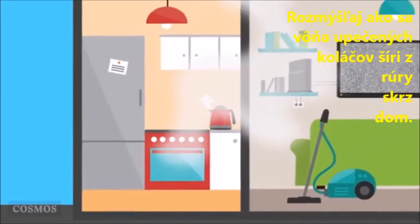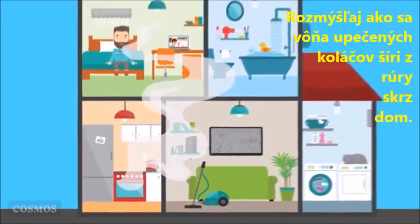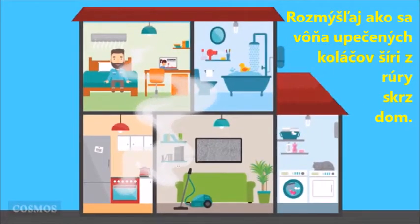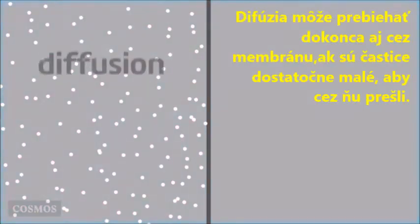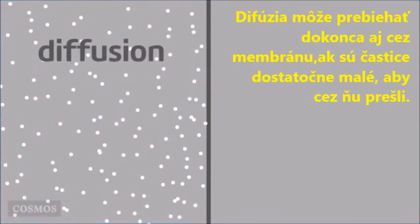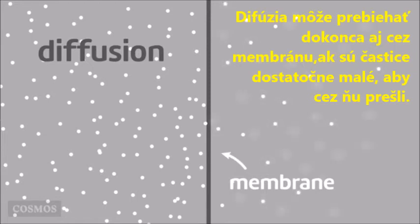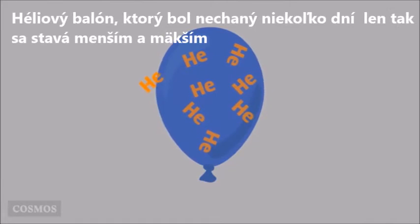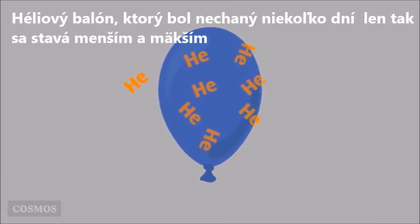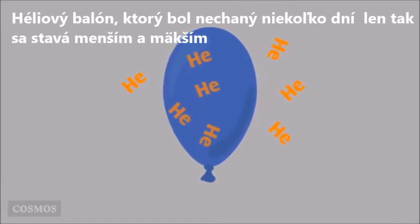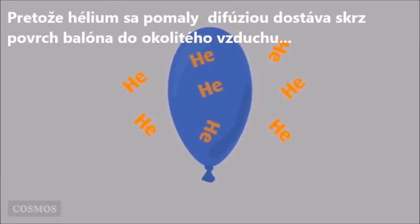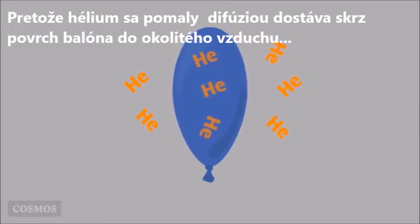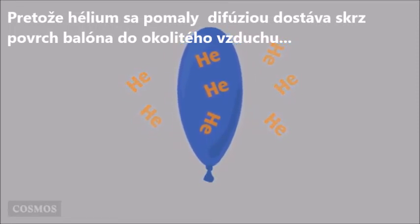Think of how the smell of baking biscuits spreads out from the oven right through the house. Diffusion can even take place through a membrane if the particles are small enough to get through it. For example, a helium balloon that's been left for a couple of days gets smaller and softer because the helium has slowly diffused through the skin of the balloon into the surrounding air.